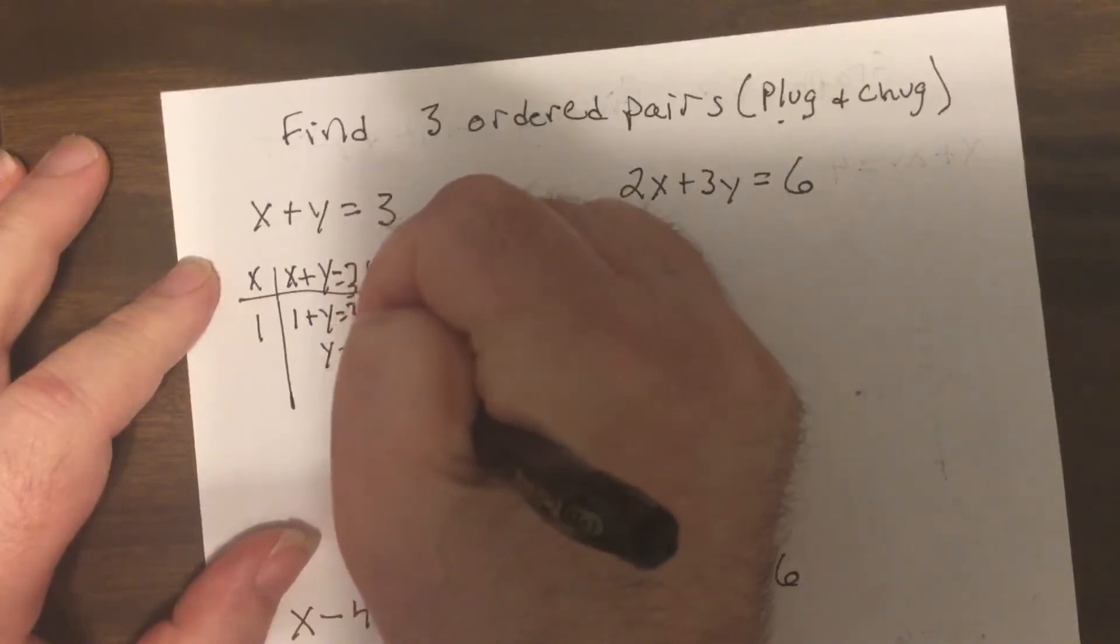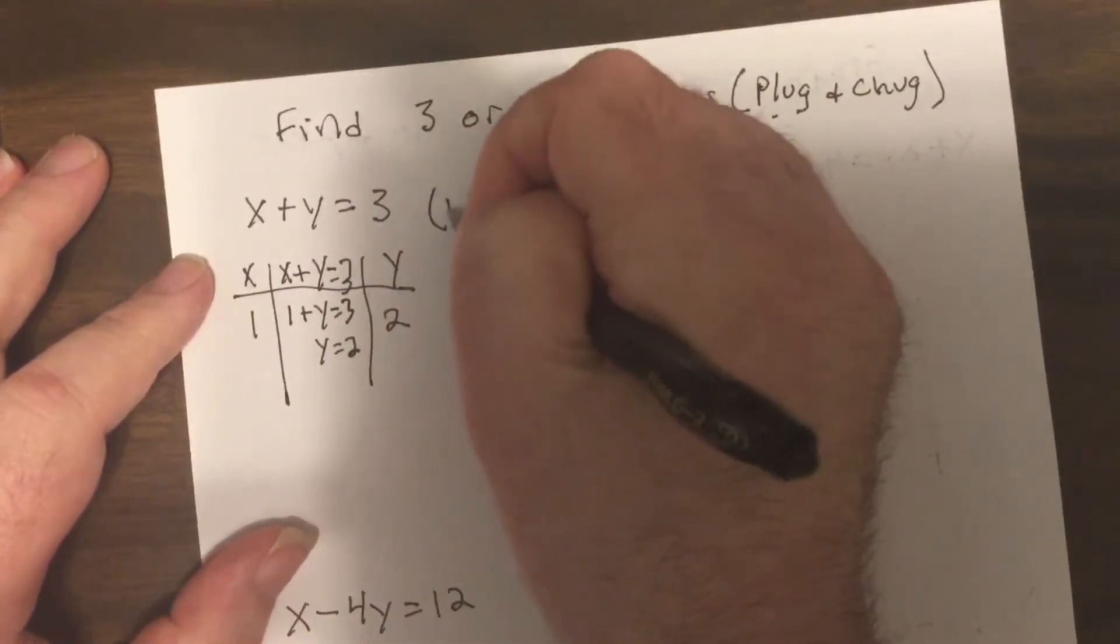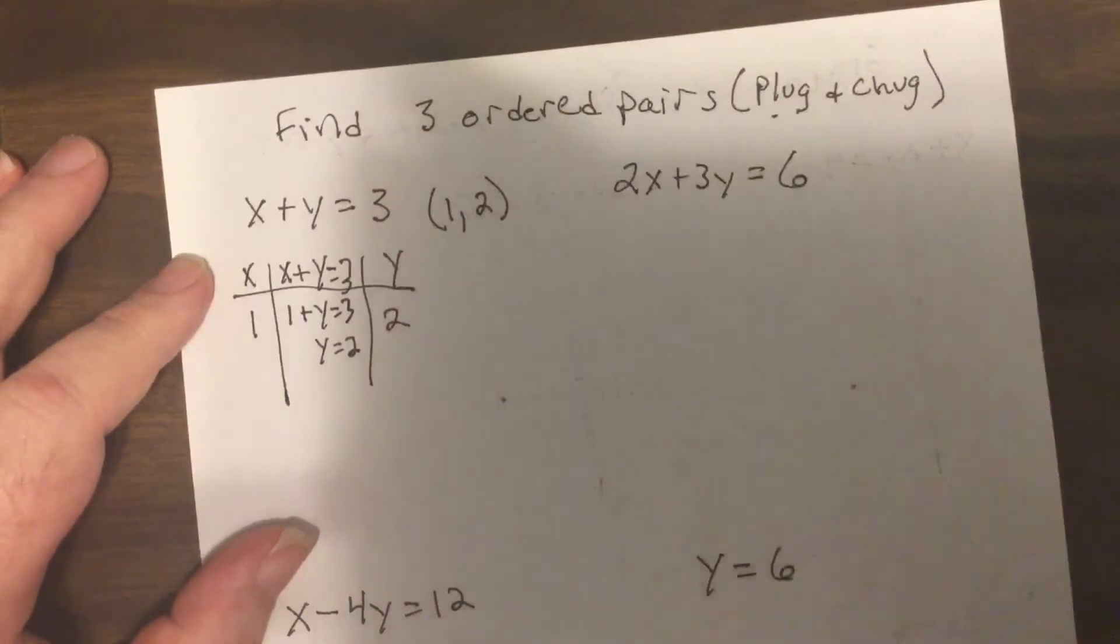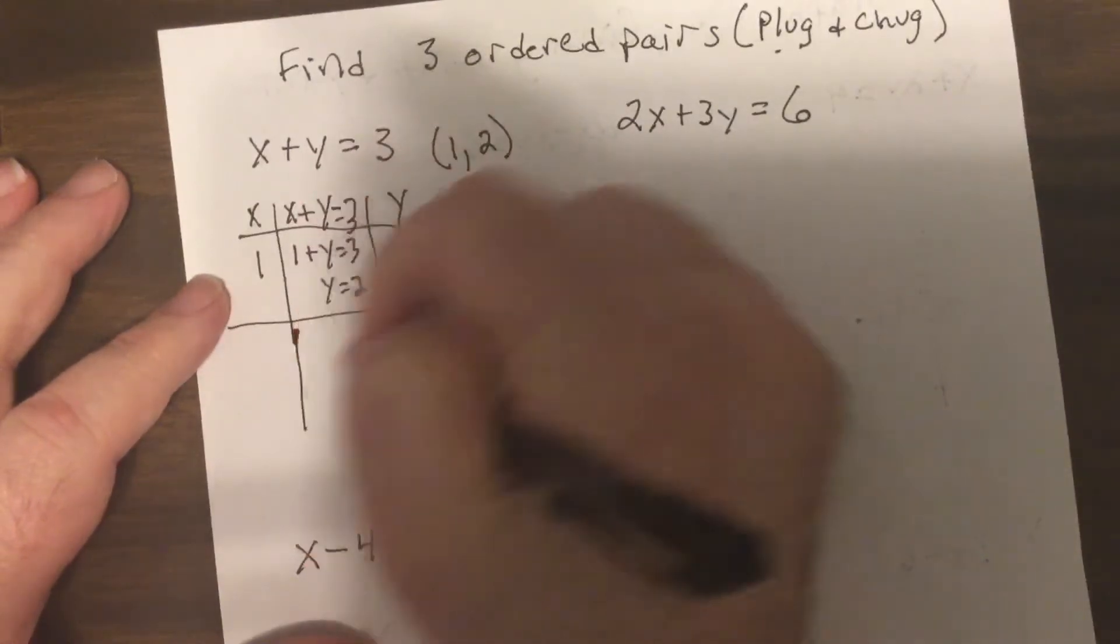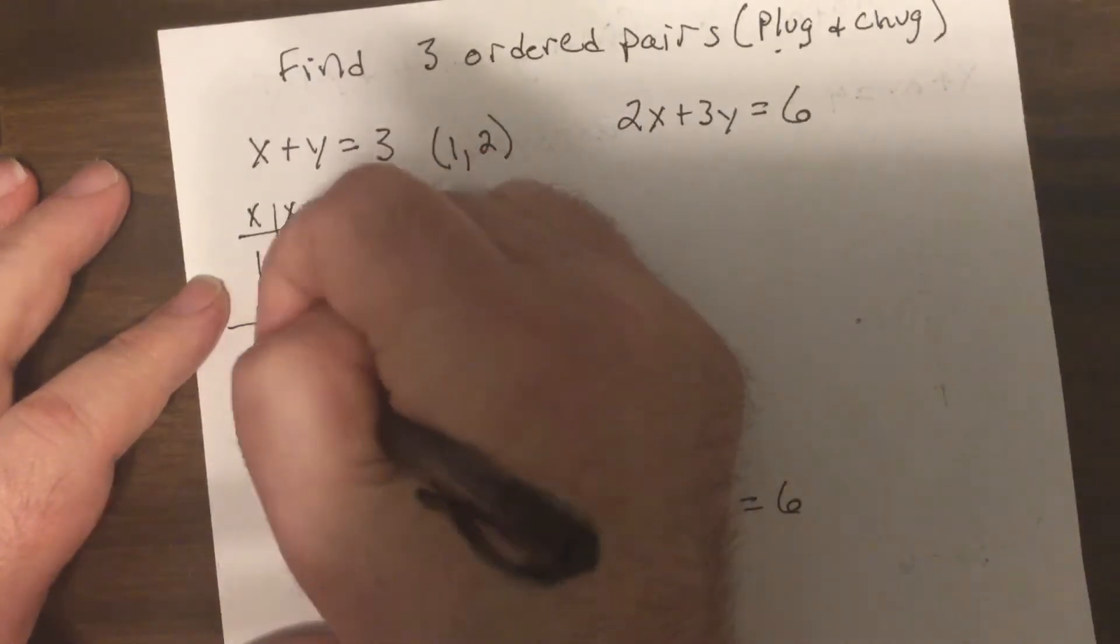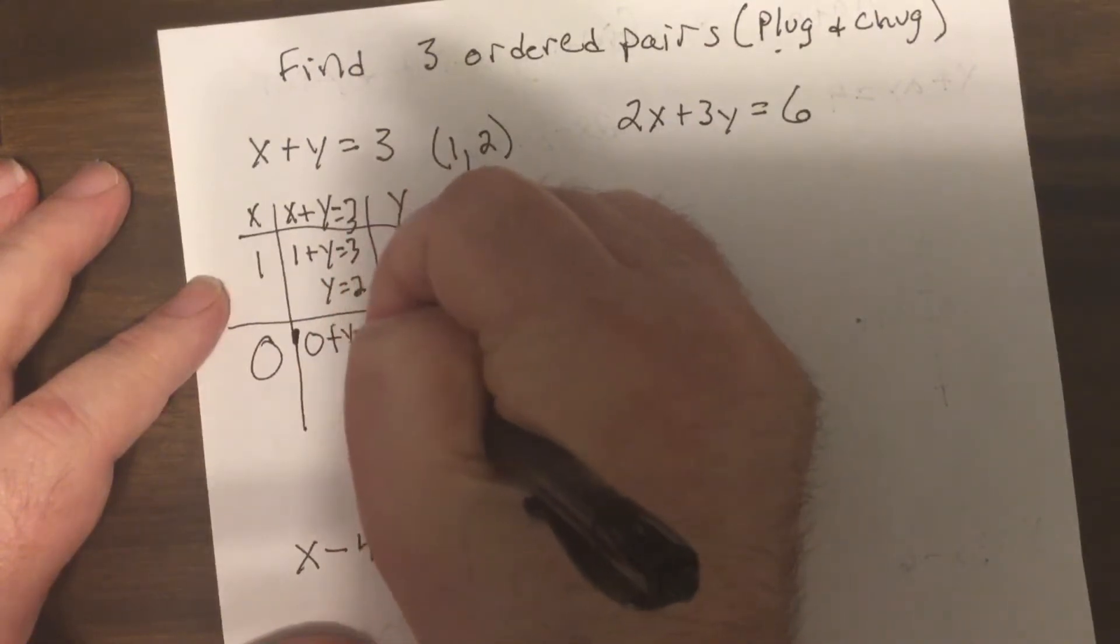Let's let X equal one. So that's one plus Y equals three. So subtract one from both sides, Y equals two. So one ordered pair is one, two. Now why not do the intercepts, which I'm gonna talk about in the next video.